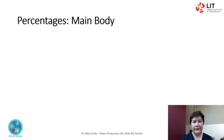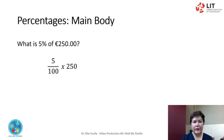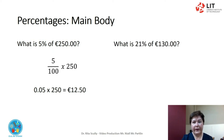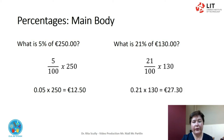Some examples. What is 5% of €250? 5 over 100 multiplied by 250. 0.05 multiplied by 250 equals €12.50. What is 21% of €130? 21 over 100 multiplied by 130. 0.21 multiplied by 130 equals €27.30.